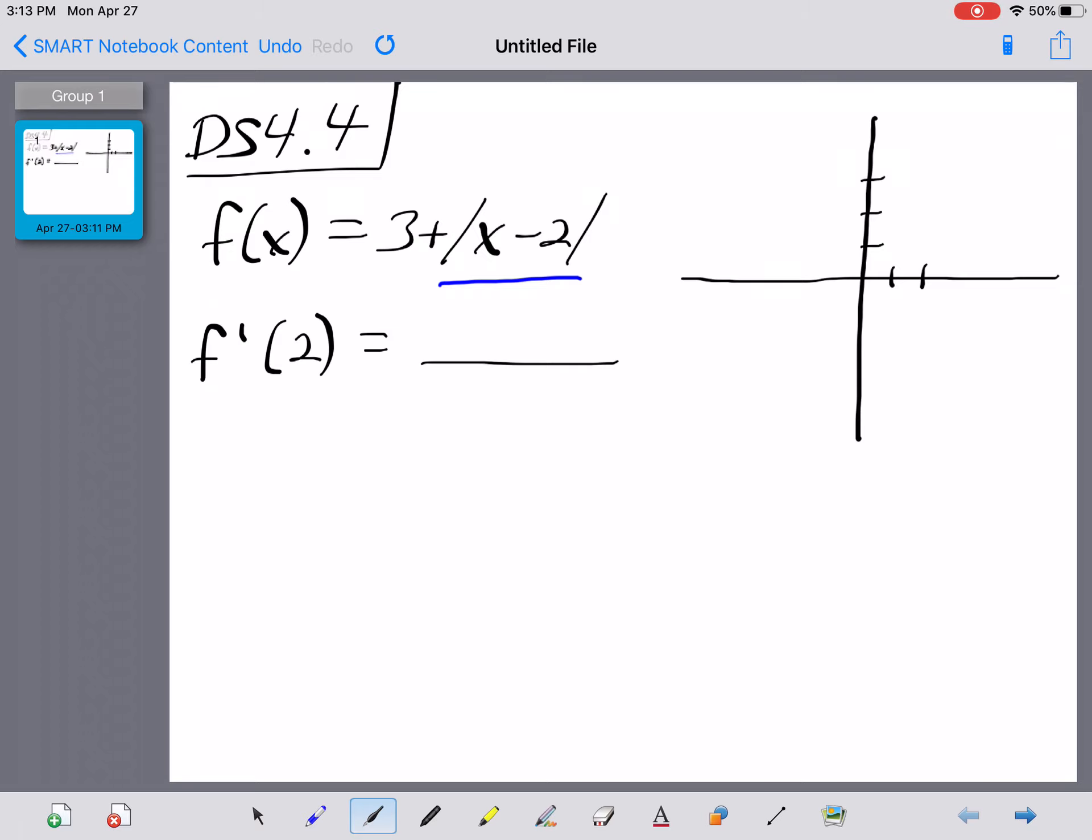So the vertex of this absolute value, v, is going to be at the point 2, 3, right here in the first quadrant. Our a value is 1, so that means that this is a normal upward opening v with a slope of 1, and then a slope of negative 1 over here on the other side.